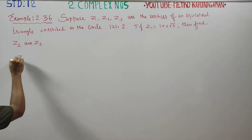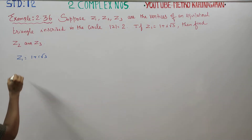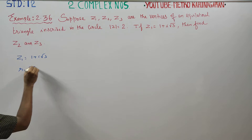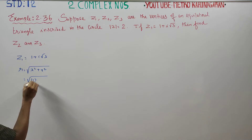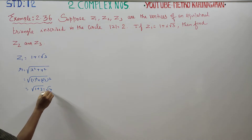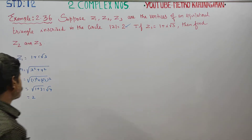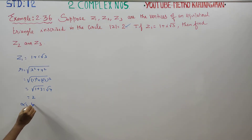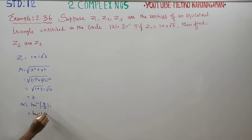z1 is equal to 1 plus i root 3. The modulus is root of 1 squared plus root 3 squared, that is root 4, which equals 2. The argument is tan inverse of y by x, that is tan inverse of root 3 by 1.